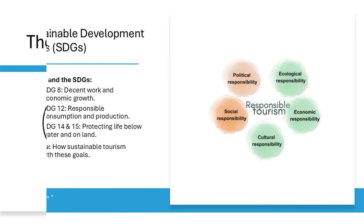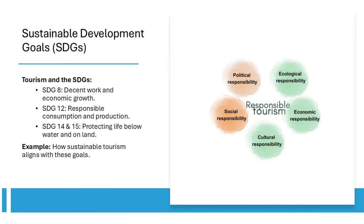Tourism plays a pivotal role in advancing the United Nations Sustainable Development Goals — a set of 17 global objectives designed to address the planet's most pressing challenges by 2030. While many SDGs are relevant to tourism, several are particularly aligned with the principles of sustainable tourism.